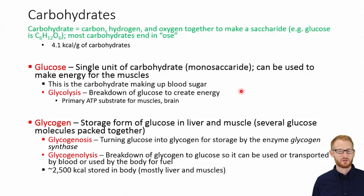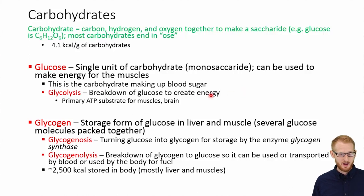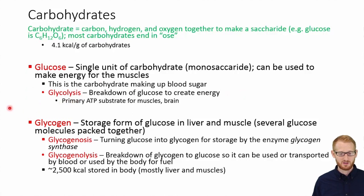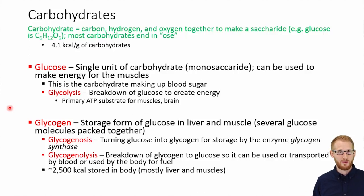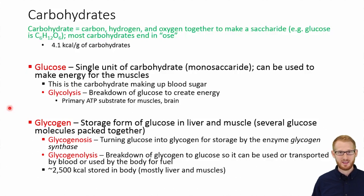When you hear someone talking about blood sugar, they're actually talking about blood glucose levels — the amount of glucose in our blood at any point in time. Glucose is broken down by a process called glycolysis, which is how we break down glucose to make ATP for energy. Importantly, glucose is the only food source that our brain and central nervous system can use for energy — it can't use fat or protein; it has to use glucose.